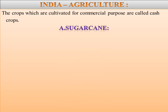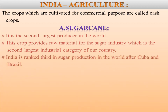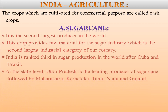The first cash crop is sugarcane. India is the second largest producer of sugarcane in the world. These crops provide raw material for the sugar industry, which is the second largest industrial category of our country. Besides providing sugar, gur, and khandsari, it supplies molasses for the alcohol industry and bagasse for the paper industry. India is ranked third in sugar production in the world after Cuba and Brazil. At the state level, Uttar Pradesh is the leading producer of sugarcane, followed by Maharashtra, Karnataka, Tamil Nadu, and Gujarat.